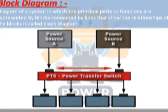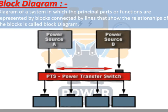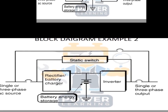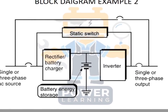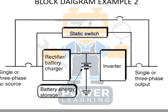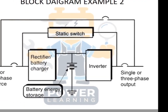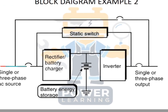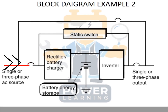The next example is a block diagram of a UPS system. On the left-hand side, it shows a single or three-phase AC source coming in. After that, there is a breaker or switch — in a block diagram we draw it simply, and it is not required to use the exact symbol.